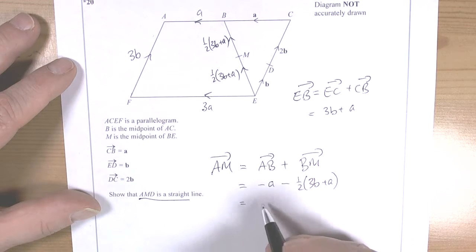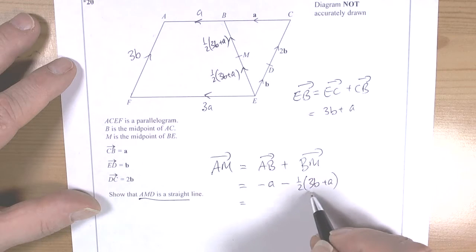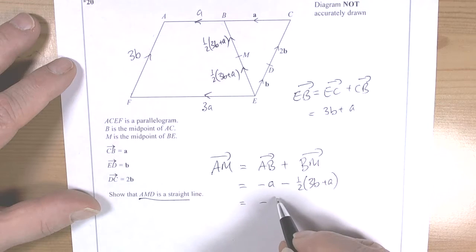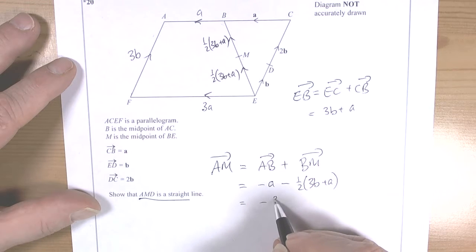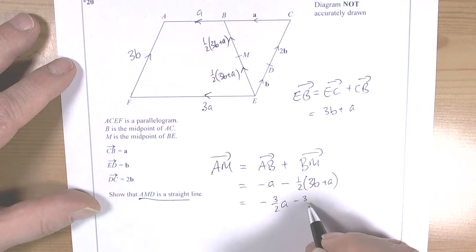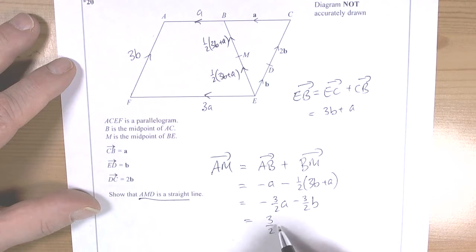When I work all that out, I end up with negative a take away half of a, so that's 3 over 2a. And then I've got half times 3b which is negative 3 over 2b. So if I take out the common factor of 3 over 2, then this is 3 over 2 of negative a take away b.